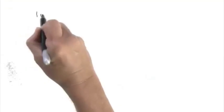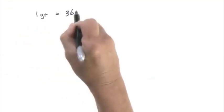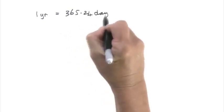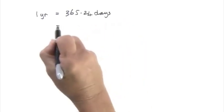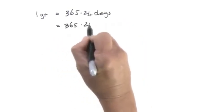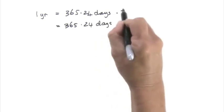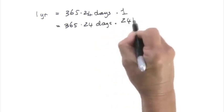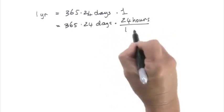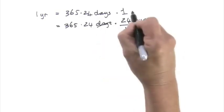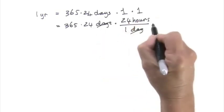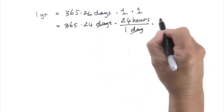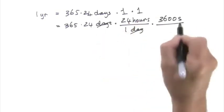In the last question in the quiz, we needed to work out the number of seconds in a year and do it formally. I'll write one year equals 365.24 days. Then I can multiply both sides of that equation by one without changing it. The one that I use is 24 hours divided by one day, which will cancel the days. Then 3600 seconds over an hour to cancel the hours.